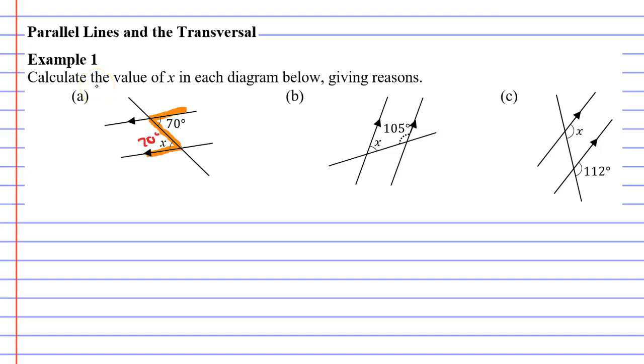Therefore, x must be 70 degrees if they are equal to each other. We also need to give reasons.